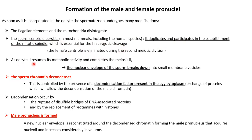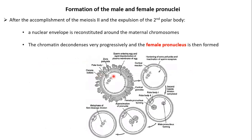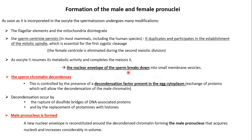As the oocyte resumes its metabolic activity and completes meiosis 2, the nuclear envelope of the sperm cell breaks down into small membrane vesicles. The sperm chromatin was very condensed, with protamines attached to it causing its compaction. Now, this very compact and condensed sperm chromatin is going to decondense. This decondensation process is controlled by the presence of decondensation factors present in the egg cytoplasm.